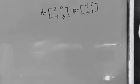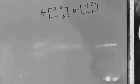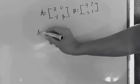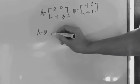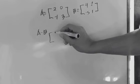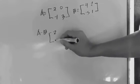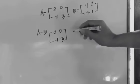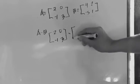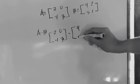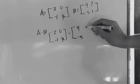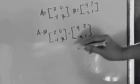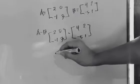Let's try another example. Matrix A minus matrix B, where matrix A is equal to [2, negative 1, 0, 3] and the value of matrix B is equal to [4, negative 5, 2, 1]. To subtract a 2 by 2 matrix, we subtract column by column.